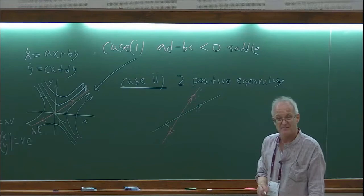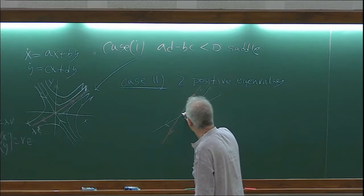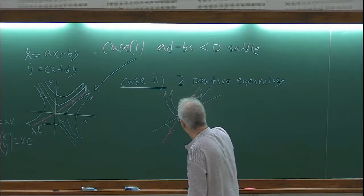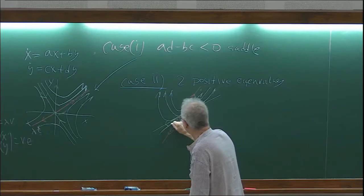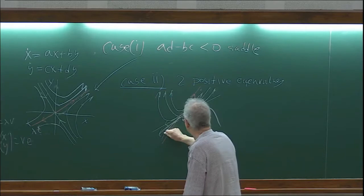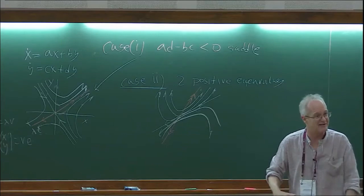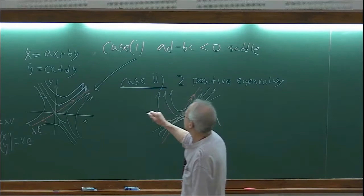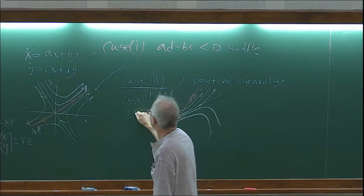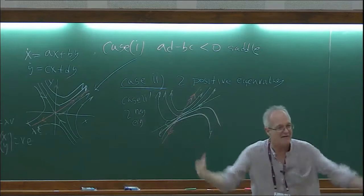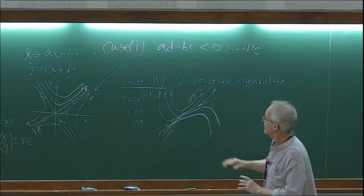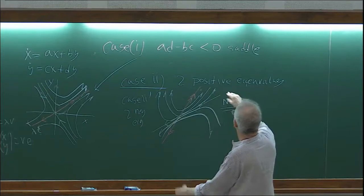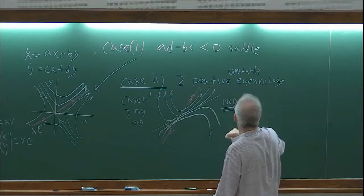The phase plane for two positive eigenvalues: everything goes out. This is called a node — an unstable node for two positive eigenvalues, and a stable node for two negative eigenvalues.